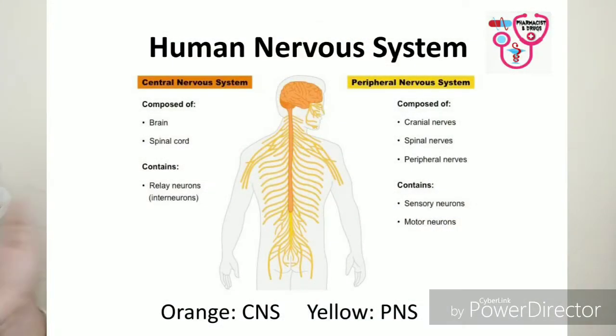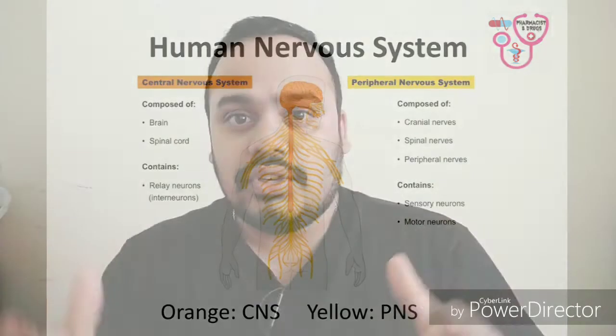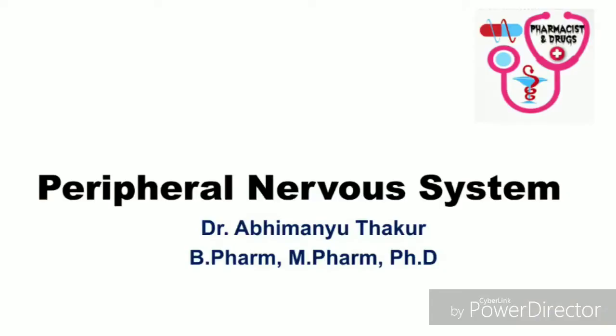The peripheral nervous system consists of other nerves like cranial nerves and the somatic nerves. Today in this topic we are going to talk in detail about what is the peripheral nervous system. For the central nervous system we are going to make another video and I will put the link later.